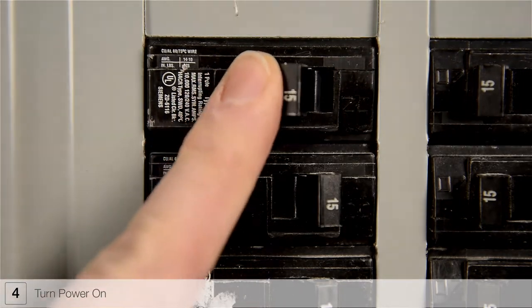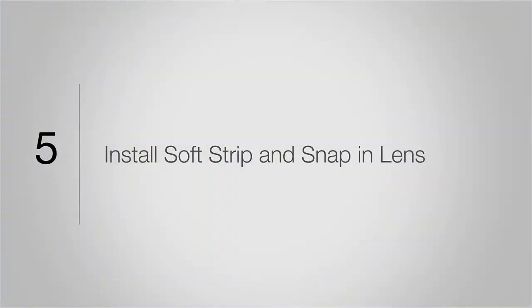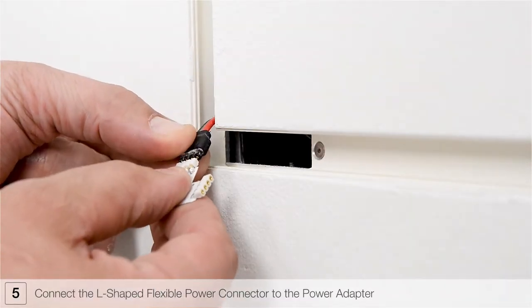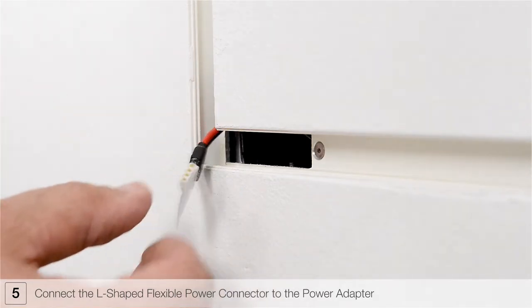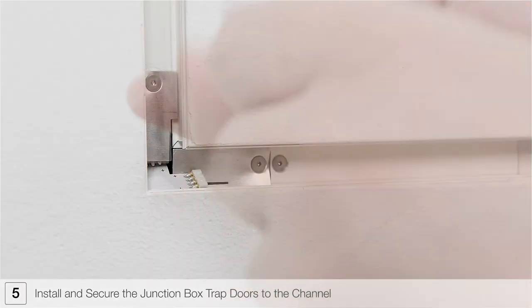Restore power to the junction box to test the LED soft strip. Connect the assembled flexible power connector to one of the LED power feed cables. Install and secure the junction box trap doors to the channel.